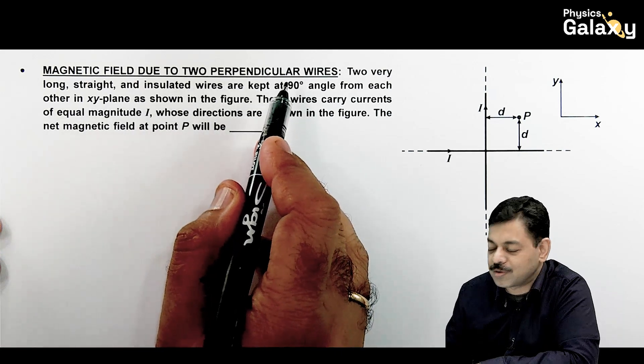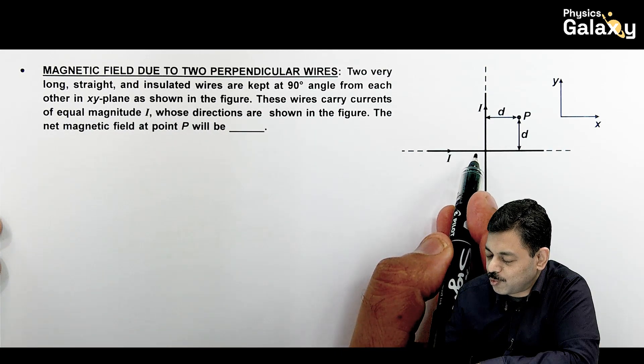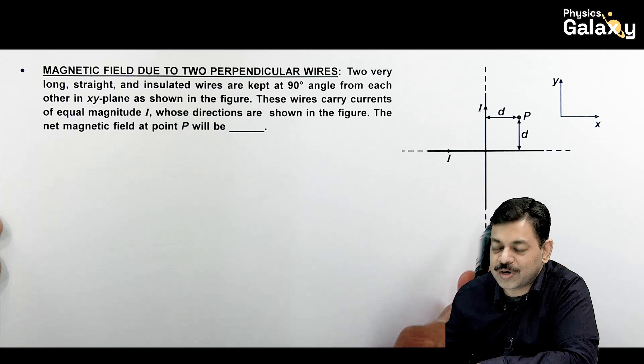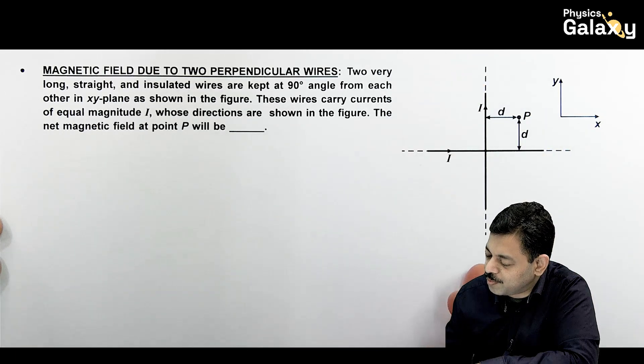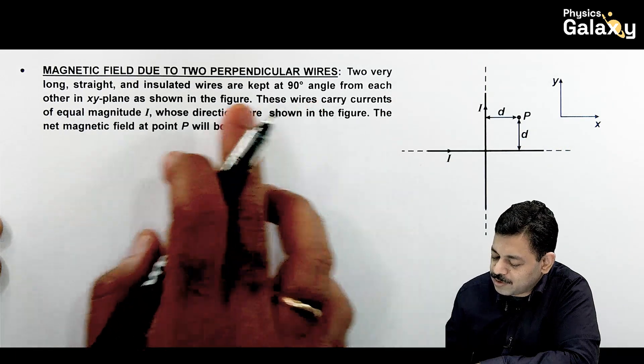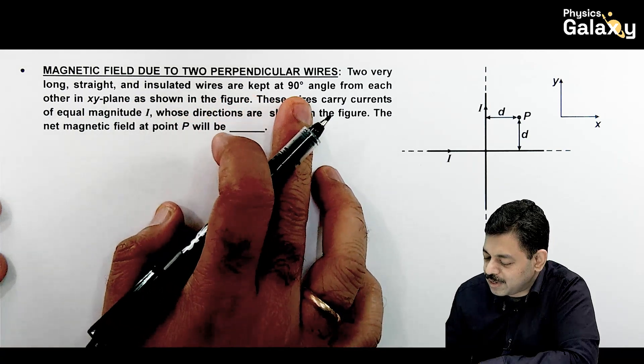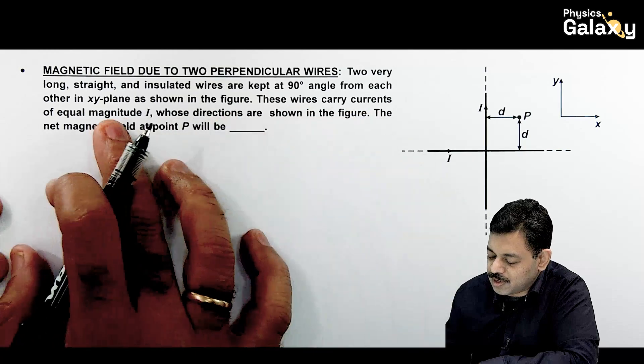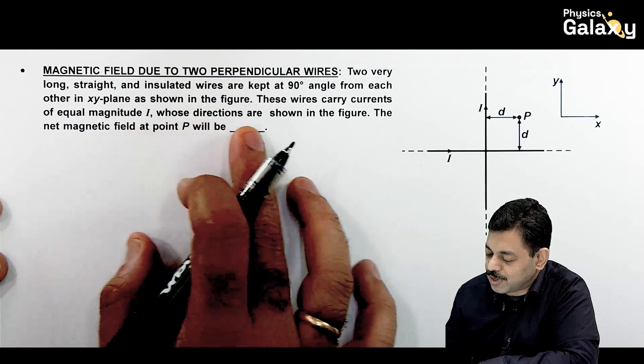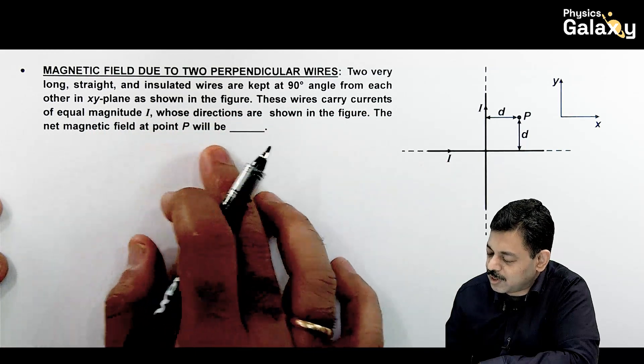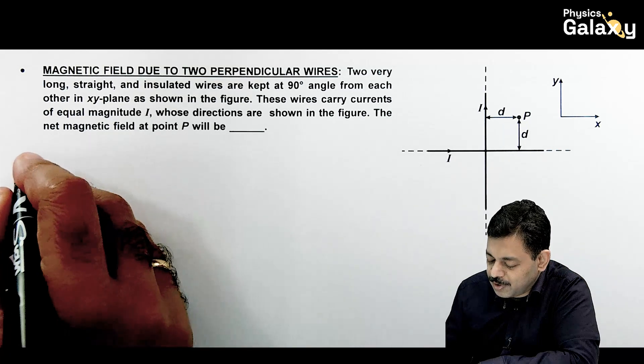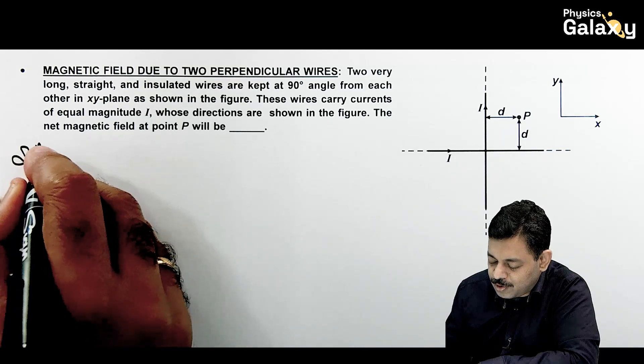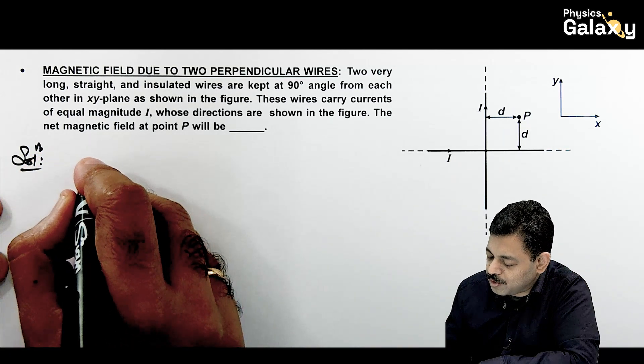Have a look at a case: magnetic field due to two perpendicular wires. Here we are given two wires, one carrying current from left to right, the other carrying current from down to up. Two very long straight insulated wires are kept at 90 degree angle from each other in xy plane as shown in the figure. These wires carry currents of equal magnitude i whose directions are shown. We need to calculate magnetic field at point P.